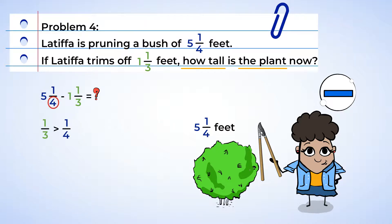So we have four and three as denominators. And if we multiply them, we get 12 as the common denominator. So five and one fourth is equivalent to five and three twelfths. And one and one third is equivalent to one and four twelfths. Now we can't take four twelfths from three twelfths, can we?